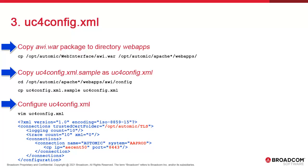Finally, we configure uc4config.xml. Here are the required settings. First, we need the connections tag with the trusted folder option. We set this to the location of the TLS certificate — slash opt slash atomic slash TLS — in double quotes. The certificate could also be loaded in Java CA certs, but we won't get into this now. We recommend taking the TLS course available in our catalog. There's a connection name — this can be any string, and we recommend not changing it.